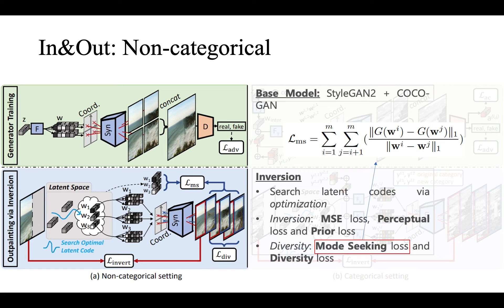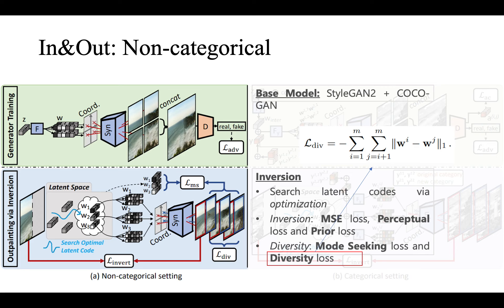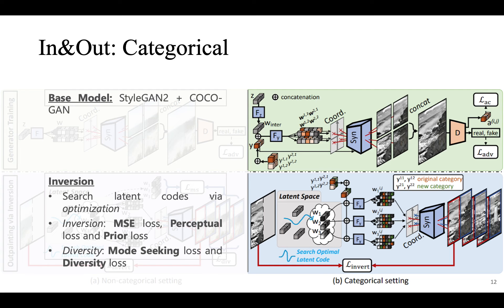We also adopt mode-seeking losses and diversity losses. These two losses are used to enforce diverse outpainting. For the categorical setting, the pipeline is similar to the non-categorical one. The difference lies in the insertion of category information into the input in both the training and inversion stages.